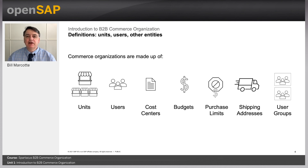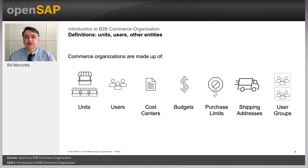Buyers and approvers alike get assigned purchase limits, which restrict how much a buyer can spend before the order is held for approval. Even approvers require limits — it defines how much they can approve before someone higher up the hierarchy is required to take a look. When you pay by account instead of by credit card, you're required to ship goods to a specific address as defined by the administrator, so the purchase can be counted and validated. Finally, user groups allow you to group users so you can assign common spending limits.